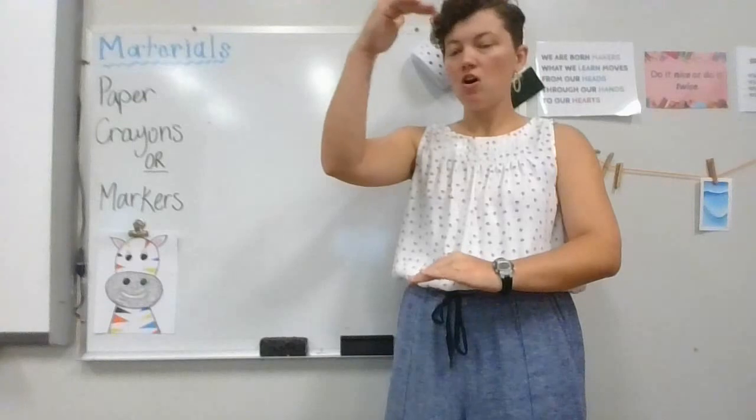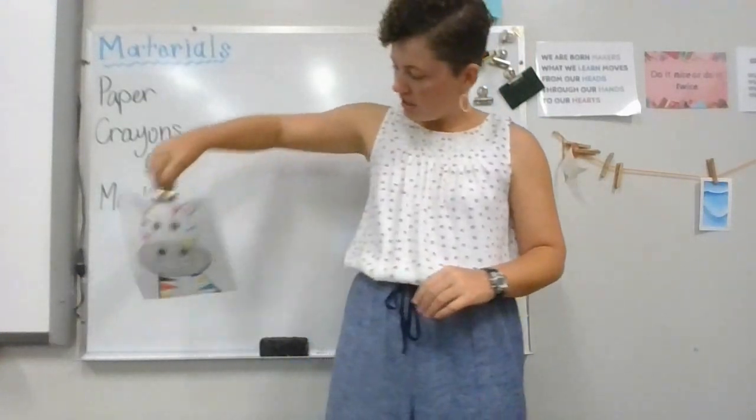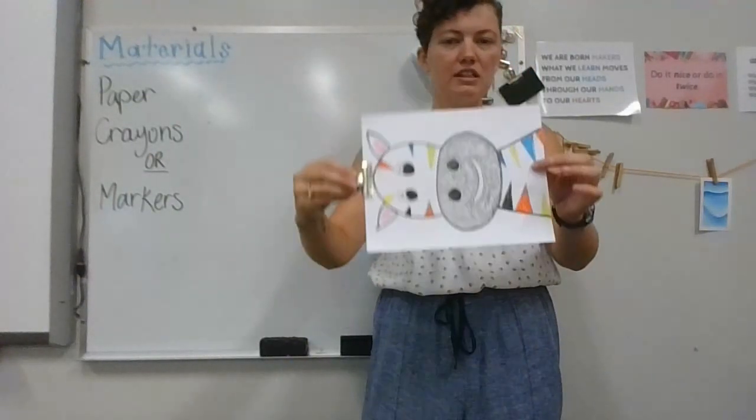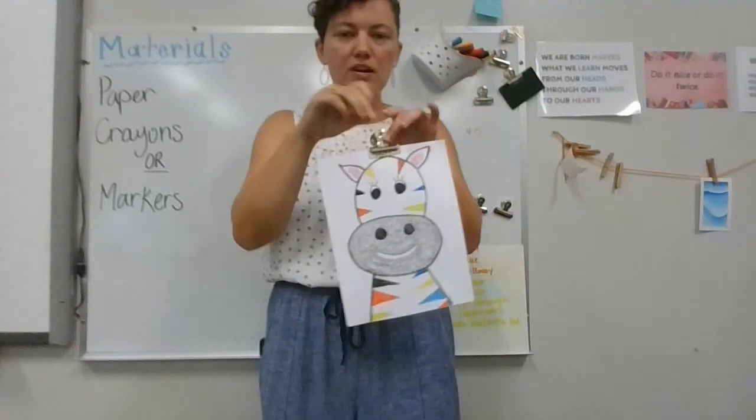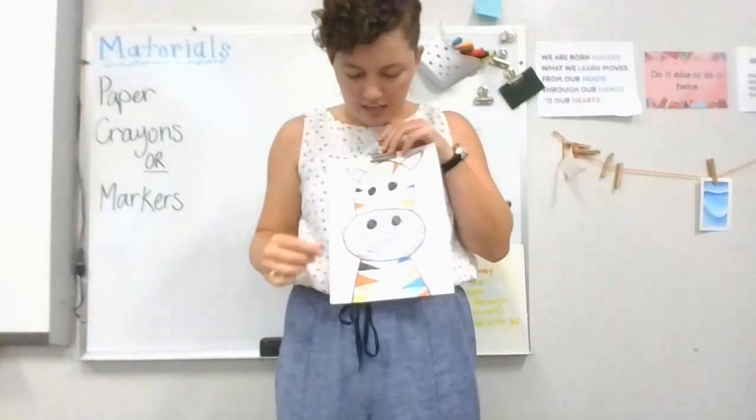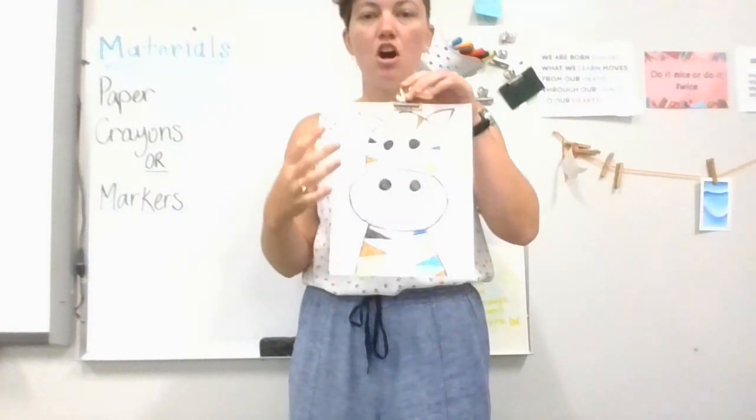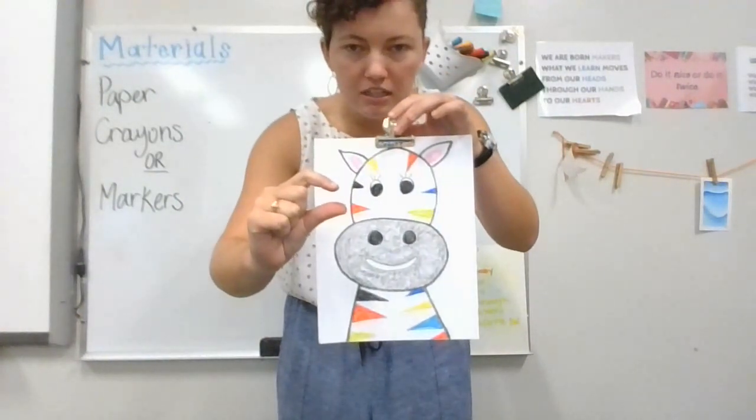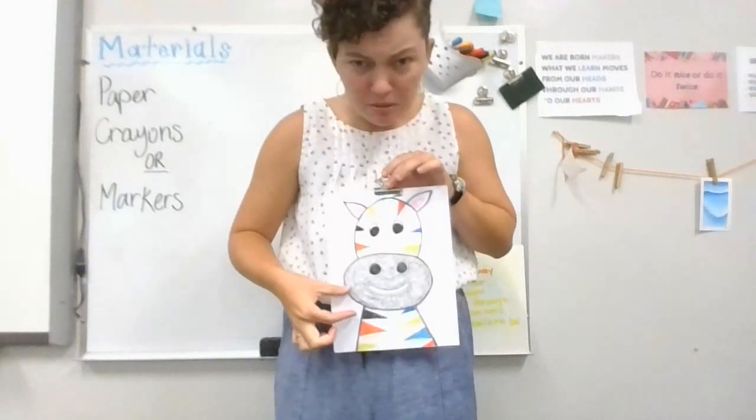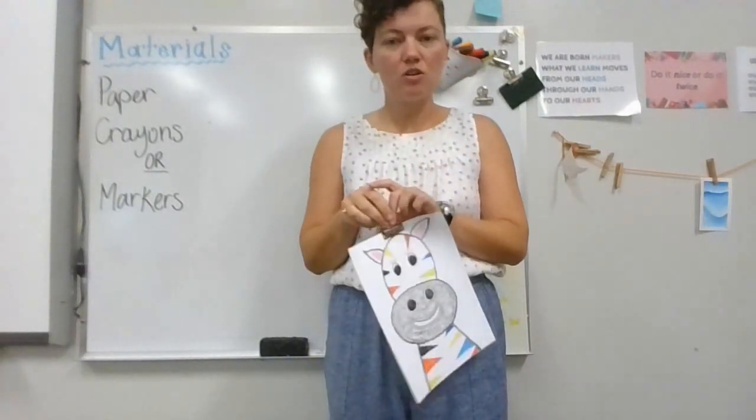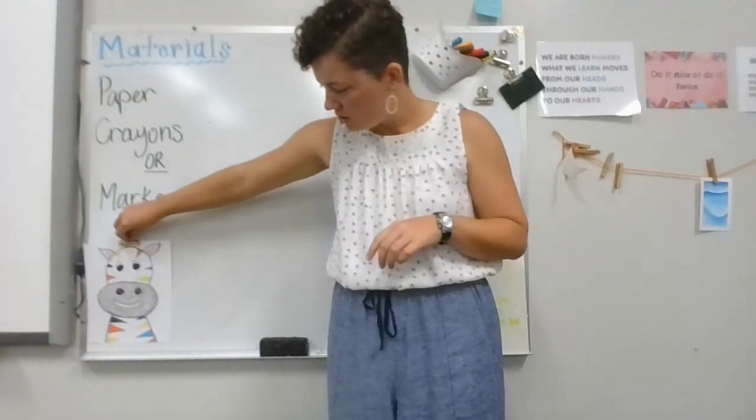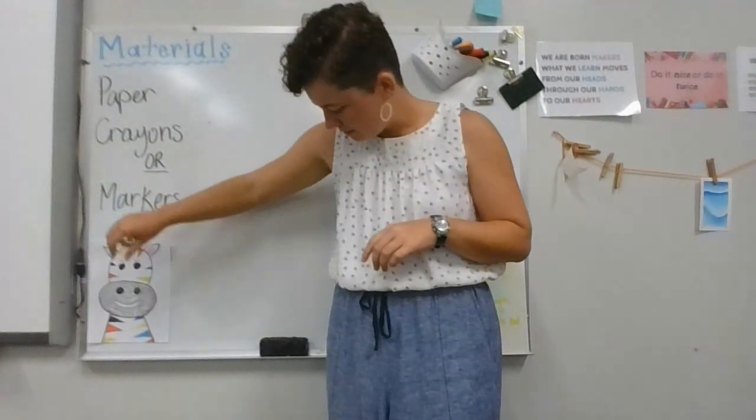We're going to hold our paper up tall and skinny, just like mine. You don't want it this way, you want it this way. The other thing before I start drawing that I want you to notice is my zebra fills up the whole paper. My zebra is not this big. If his head was that big, you'd have all that extra room and you wouldn't be able to put all the detail on your zebra, so you want to make your zebra pretty big.